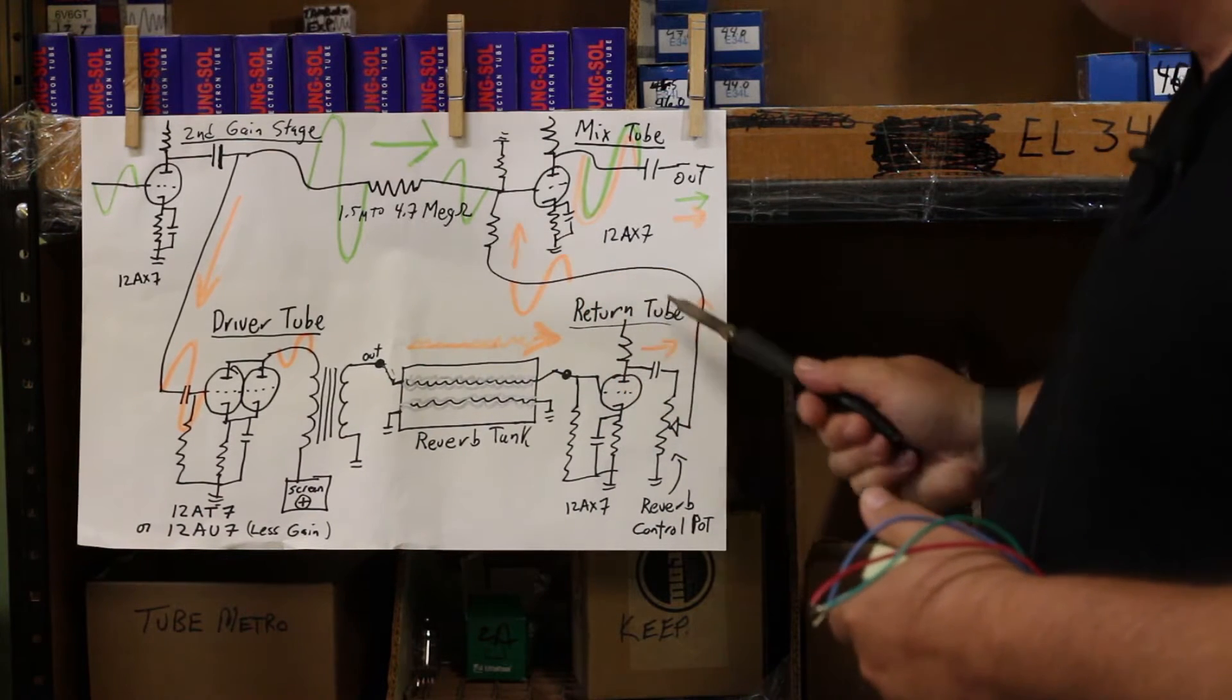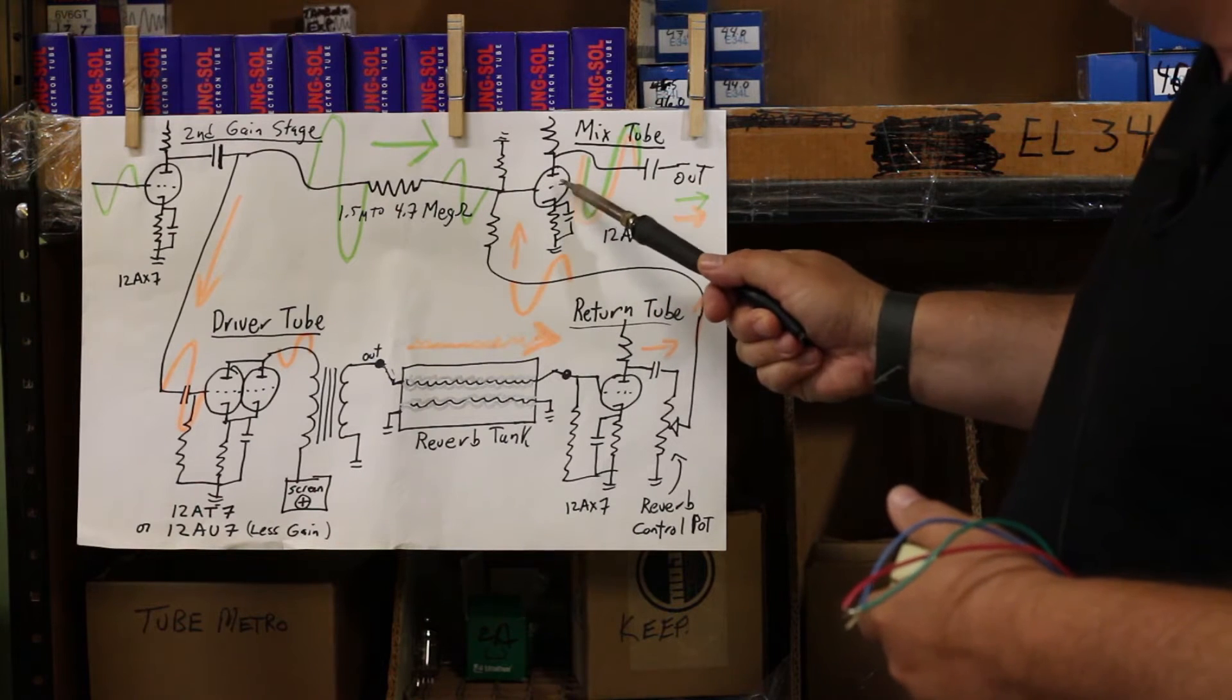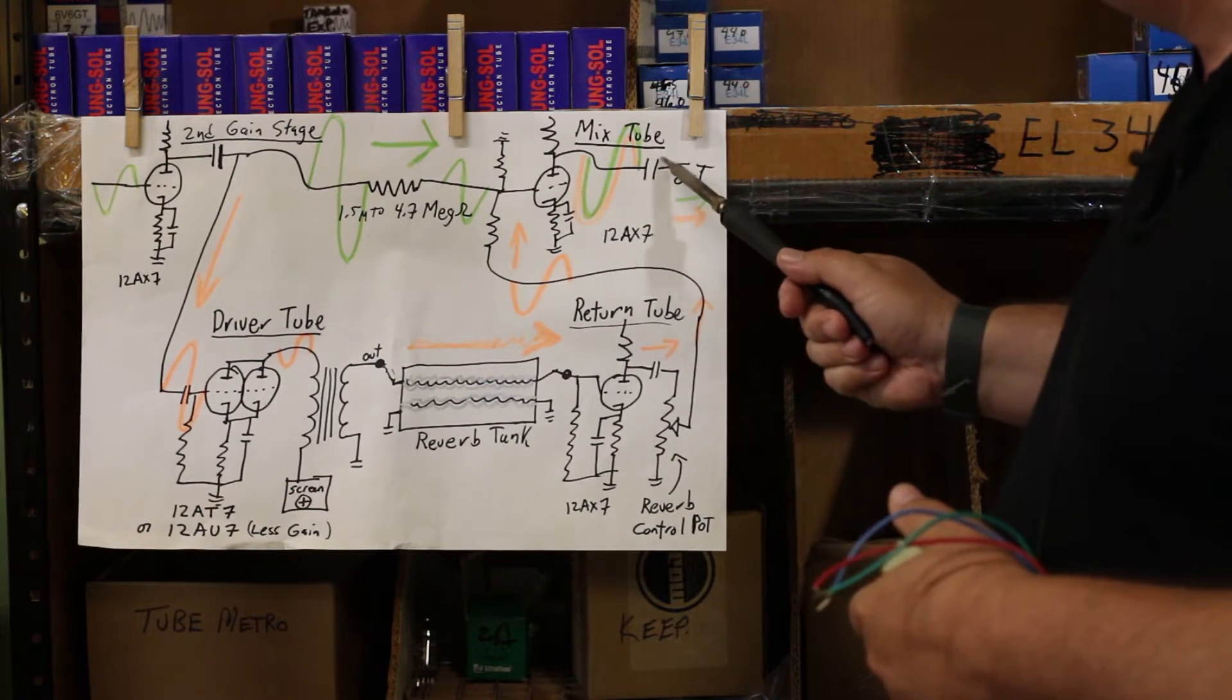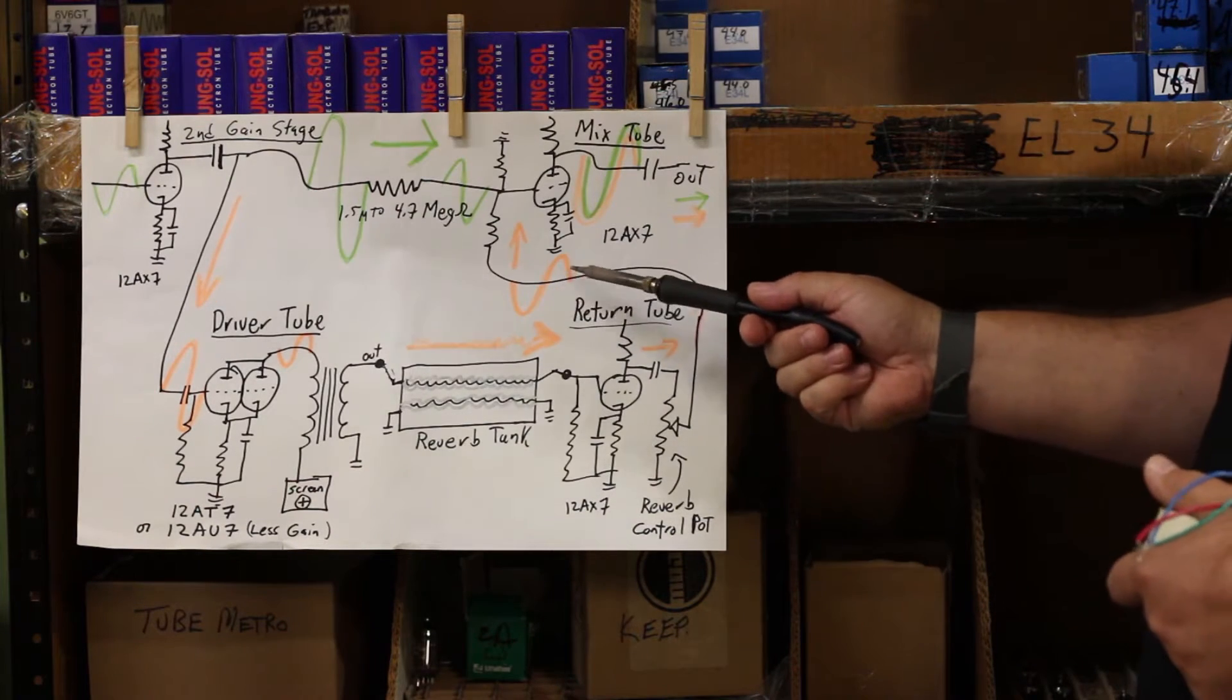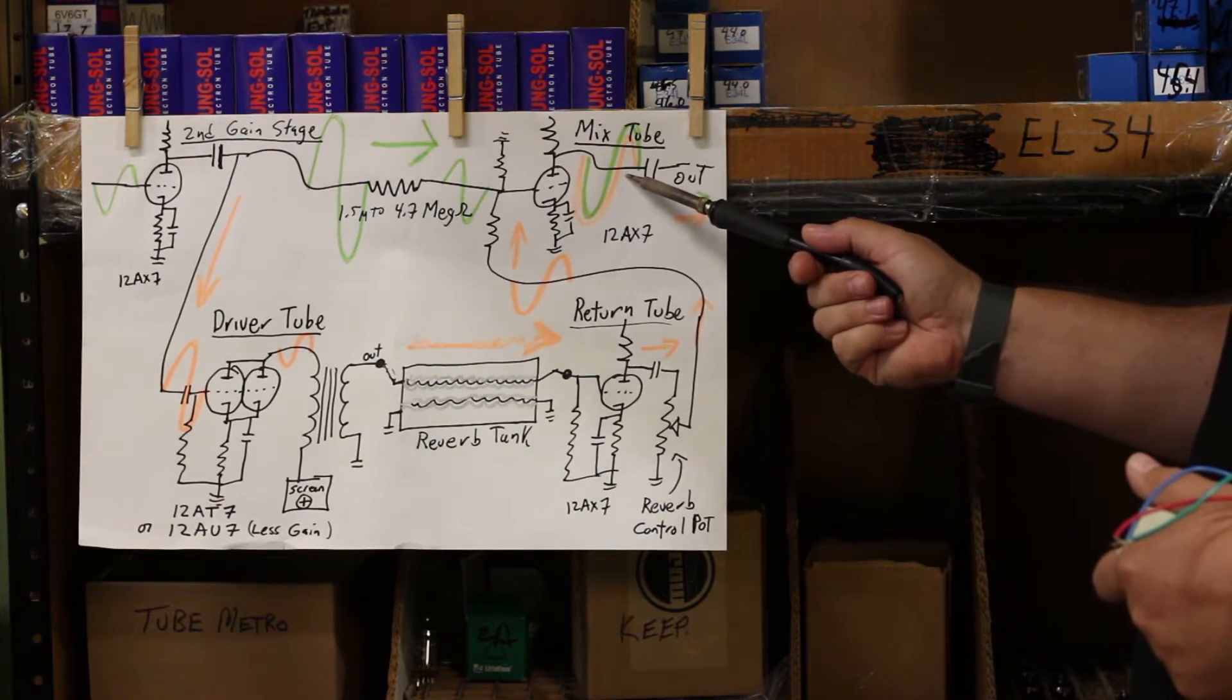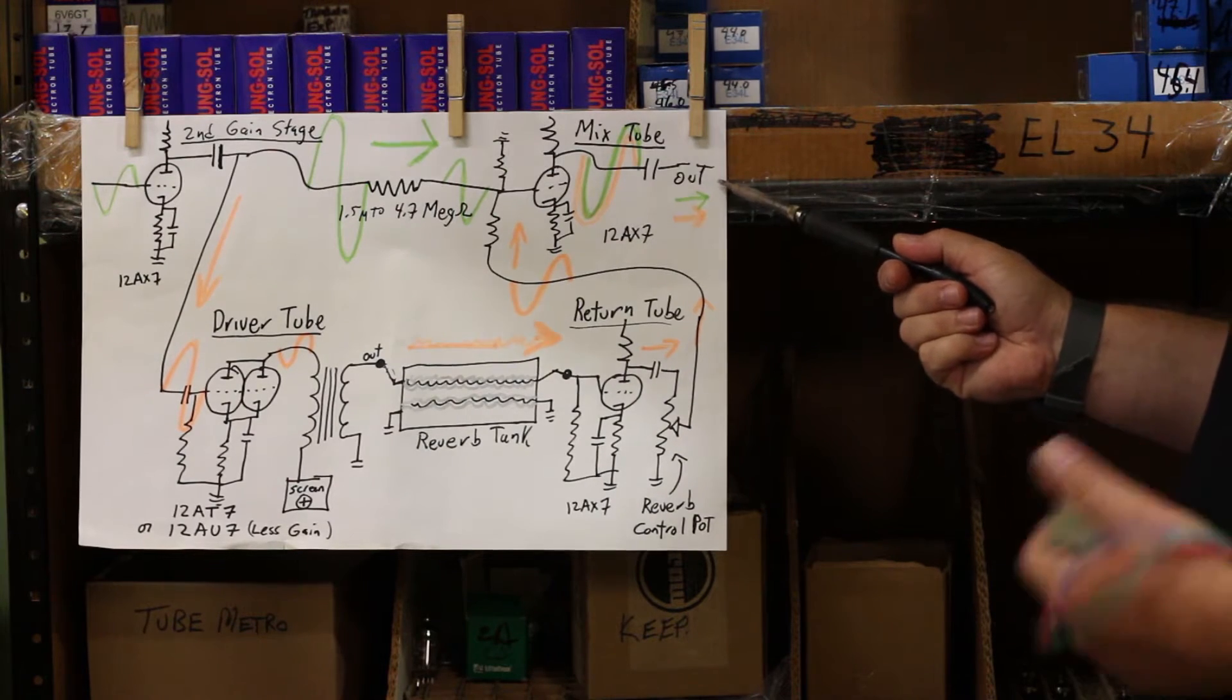They mix together here. Again, the reverb is controlled, how much of it down here. And they blend in this 12AX7, the mix stage or mix tube. And you can see, if you can see these colors, now we've got a combination of reverb and dry signal heading out of the amp. And that's basically it.